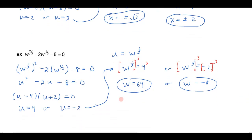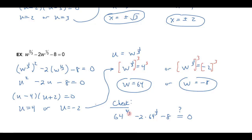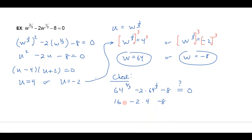Let's just double-check — let's see if these actually work. This will be a nice review of our fractional exponents as well. So if I have 64 to the two-thirds power minus 2 times 64 to the one-third power minus 8, will that really equal zero? The denominator is the root, so I take the cube root of 64, which is 4, and then the numerator is the power, so I square that 4, giving me 16. The cube root of 64 here is 4. So 16 minus 8 is 8, and 8 minus 8 equals 0. That checks.